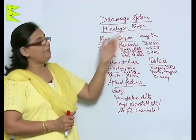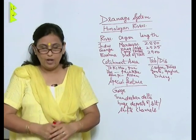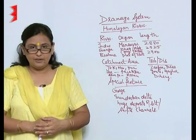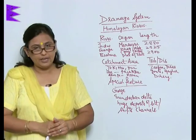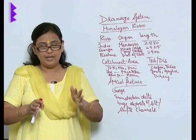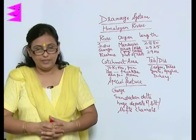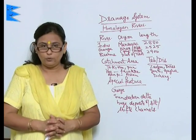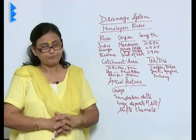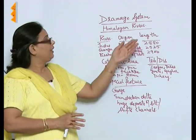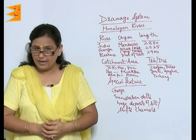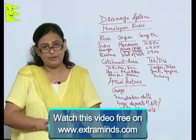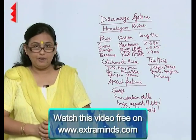The Himalayan rivers, as we already know, are the snow-fed rivers, and the peninsular rivers are those rivers which are generally based on rainfall. That is why they do not flow throughout the year. The Himalayan rivers have lots of water as they are snow-fed, whereas peninsular rivers can actually even dry up.